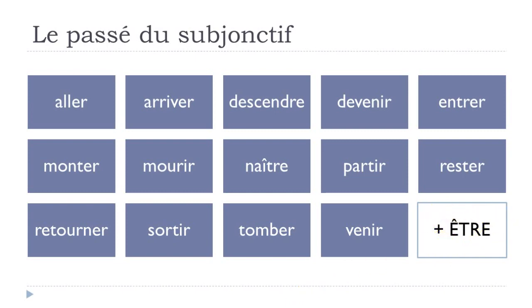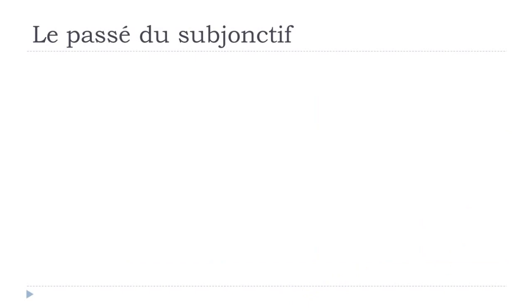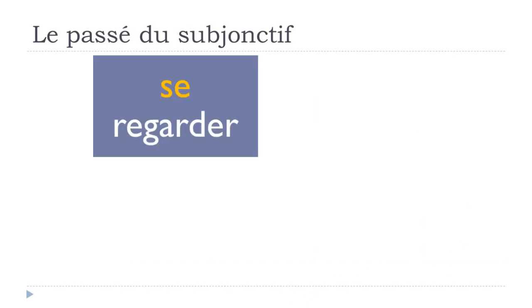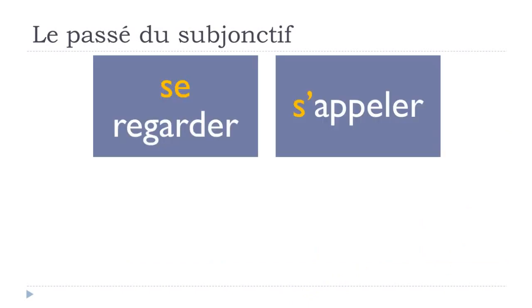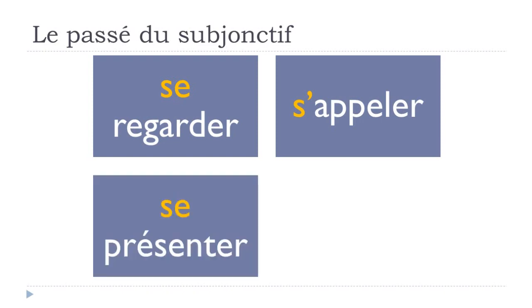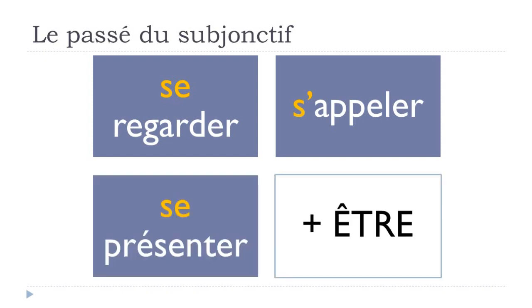Also, all reflexive verbs — se regarder, s'appeler, se présenter — require être. As long as you have a verb with 'se something', you know to construct it with être. They behave a bit differently because you will have to add extra elements, but we'll see that in this lesson.